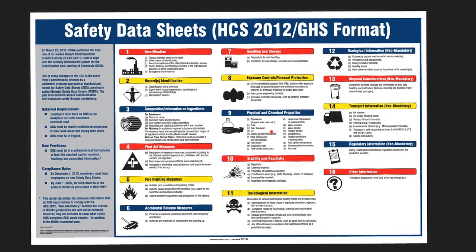Number nine is physical and chemical properties. Number ten is stability and reactivity — how reactive is it, how stable is it. Number eleven is toxicology — the toxicological information, all the symptoms it could cause, is it toxic or not. Number twelve is ecological information — and this is non-mandatory, so it's not required to say what the ecological ramifications would be if it gets into the environment. Number thirteen is disposal considerations — how do you get rid of it, also not mandatory. Fourteen covers transport considerations. Fifteen is regulatory information. Sixteen is for any other things.